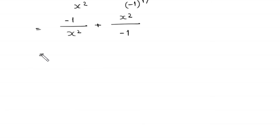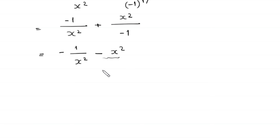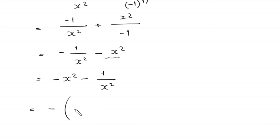This becomes negative 1 over x squared, plus x squared divided by negative 1, which gives negative 1 over x squared minus x squared. Rearranging, we write negative x squared minus 1 over x squared. Using the negative sign before the parenthesis, these two terms become negative times the quantity x squared plus 1 over x squared.